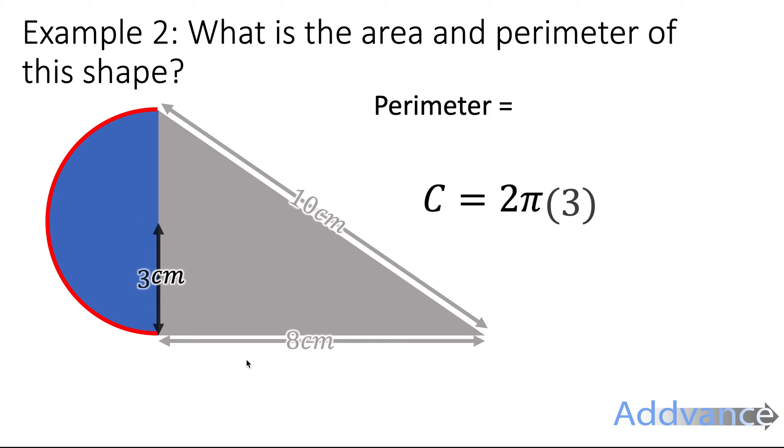And the radius of this circle is 3 centimeters. So the circumference is going to be given by 2 times pi times r, 2 times pi times 3, which on your calculator will be 18.84955 centimeters. But we're going to half it because it's half a circle, half the circumference, and we get 9.42 centimeters.